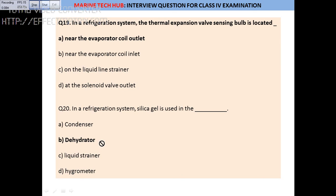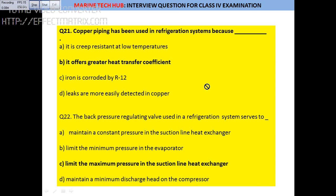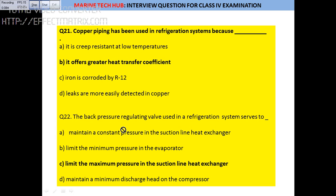Question 20: Silica gel in the refrigerant system is a dehydrator — it absorbs all the moisture. Question 21: All pipes in the refrigerant system are made of copper piping because it offers a greater heat transfer coefficient. The answer is option B.